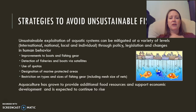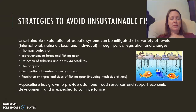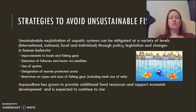Strategies to avoid unsustainable fishing include setting quotas and legislation at international, national, and local levels — but ultimately we must change human behavior. Other measures include improving boats and fishing gear, using satellites to detect boats and enforce legislation, designating marine protected areas, and restricting the type of fishing gear such as mesh size on nets to cut down on bycatch. We've also moved to using aquaculture, providing food resources outside of our natural ocean fisheries, and this method is expected to continue to rise.